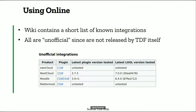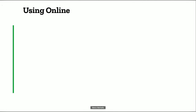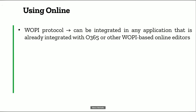Now the most interesting part: using Online. How can you nowadays use Online? The wiki contains a short list of known integrations, all marked as unofficial since they are not released by the Document Foundation itself. Nextcloud is one of the strongest integrations we can notice. There is also a Moodle plugin, which is quite interesting — it allows you to collaboratively edit documents with students or allow them to submit an assignment using the online editor. There are also ownCloud and Mattermost integrations that we know of, but nobody up to now has reported testing them and written it up in the wiki.